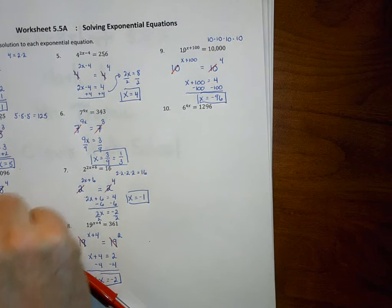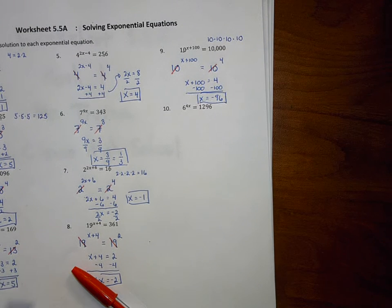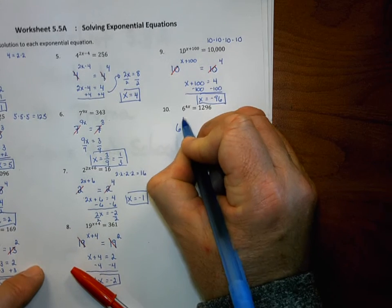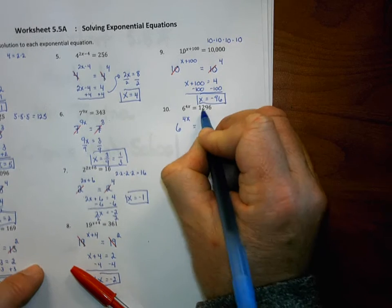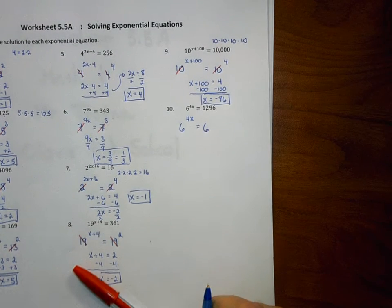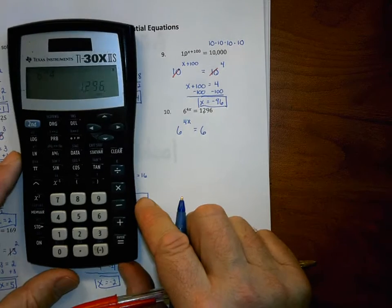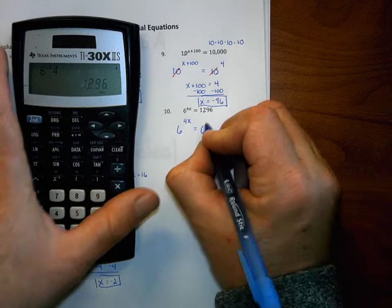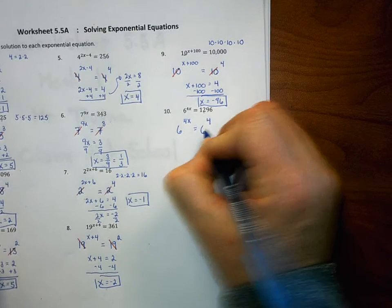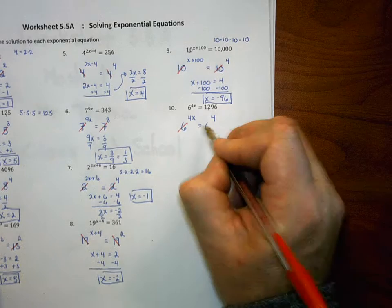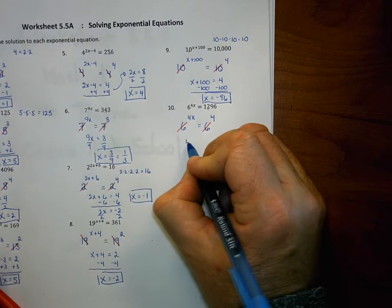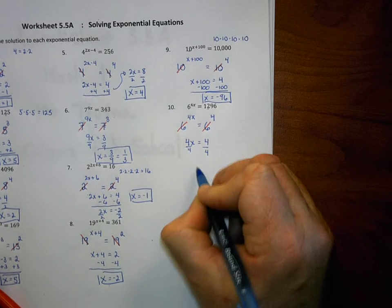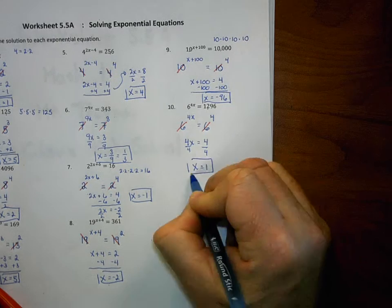Last problem, number 10: 6 to the 4x power is equal to 1,296. I keep the smaller base side and check if 1,296 is a power of 6. 6 to the 4th power is 1,296, so I change it accordingly. The bases are the same and cancel each other out. The equation is 4x equals 4. Dividing by 4, x equals 1.